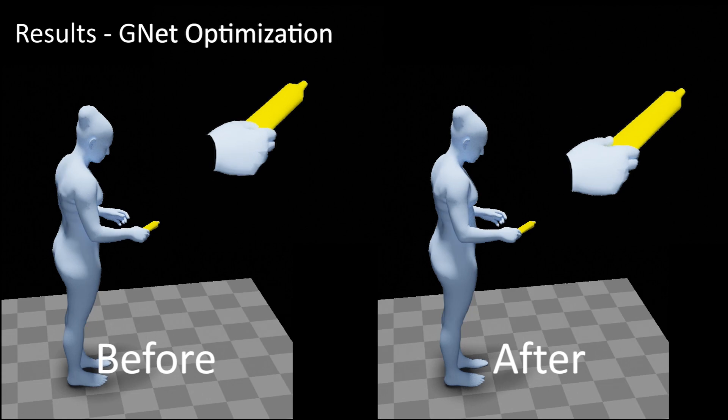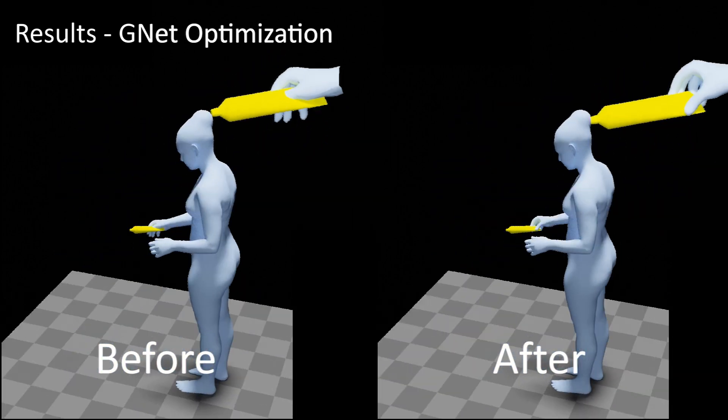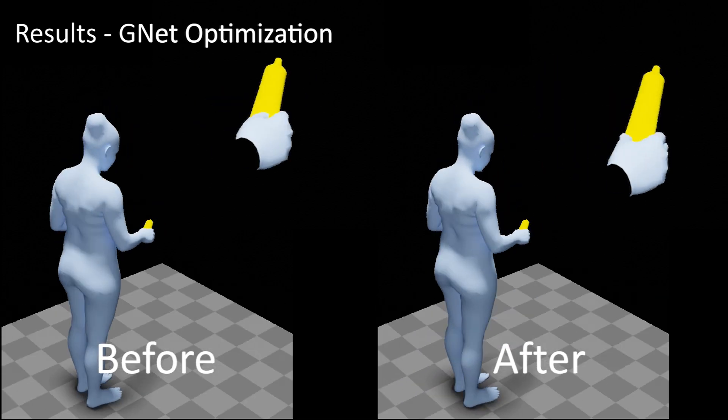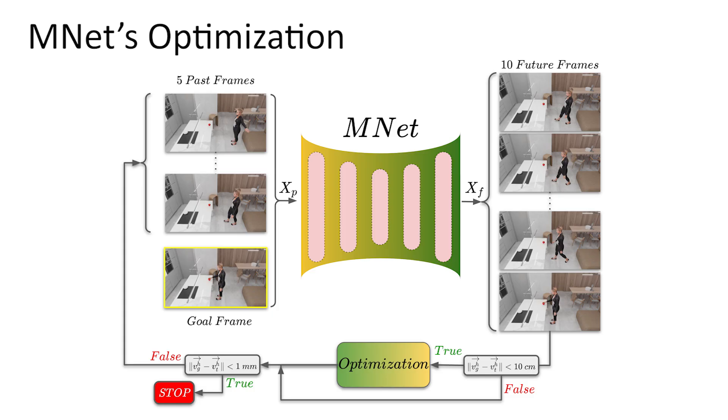After the optimization, the body posture is more natural, the head looks at the object, and the hand better contacts the object with fewer penetrations. In addition to SMPL-X parameters, MNet predicts 3D body vertex offsets from the current to the next frame, as well as hand-to-object offsets. It is important that the final hand grasp gets as close as possible to the goal grasp.